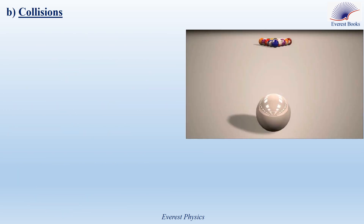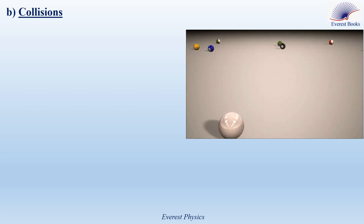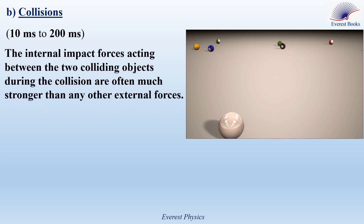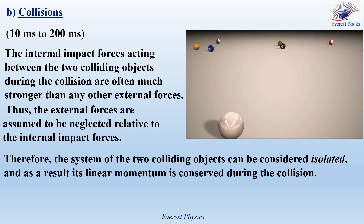Now let's move to collisions. Watch this video — the billiard balls collide with each other. In most cases, during a collision between two objects, their velocities are changed during a very short interval of time, between 10 and 200 milliseconds, under the action of the internal impact forces. The internal impact forces acting between the two colliding objects during the collision are often much stronger than any other external forces. In collisions, the external forces do not necessarily add up to zero, but they are neglected relative to the internal impact forces. Therefore, the system of the two colliding objects can be considered isolated, and its linear momentum is conserved during the collision.